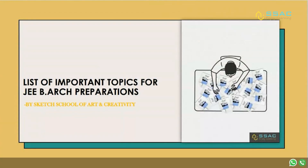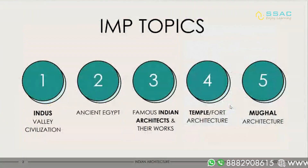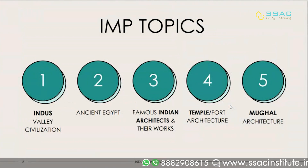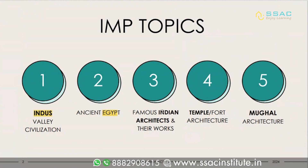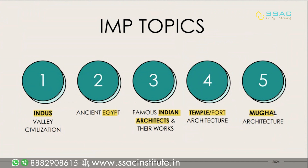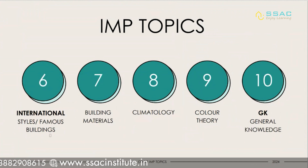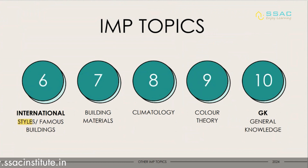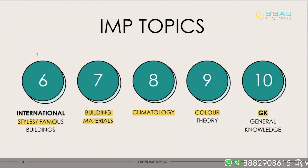Starting with the list of important topics for JBH preparations, the important topics include: Indus Valley Civilization, Ancient Egypt, famous Indian architects and their works, temple or fort architecture, Mughal architecture, famous international buildings and their styles, building materials, climatology, and color theory. GK questions are also frequently asked.